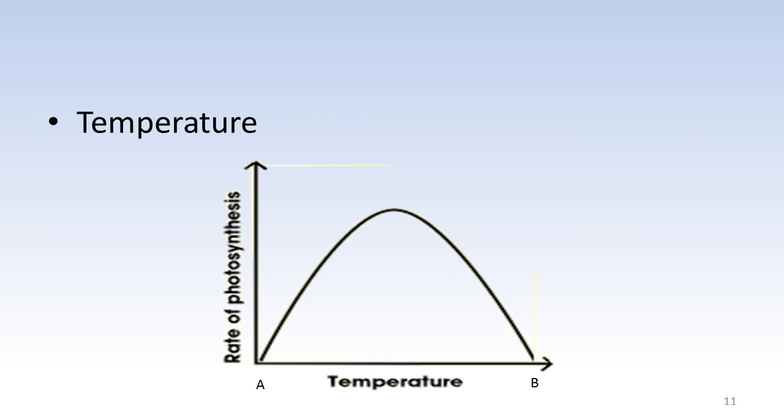At the other extreme, at point B, the temperature is very high. Therefore, the enzymes will not function and photosynthesis will be very low or it will stop.